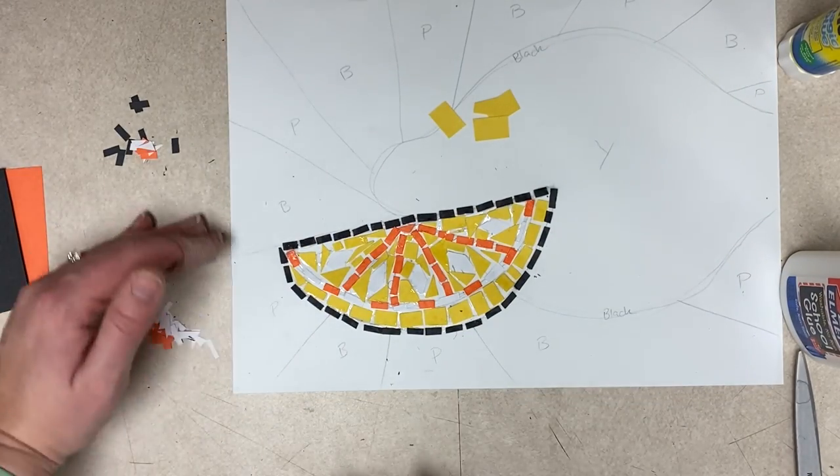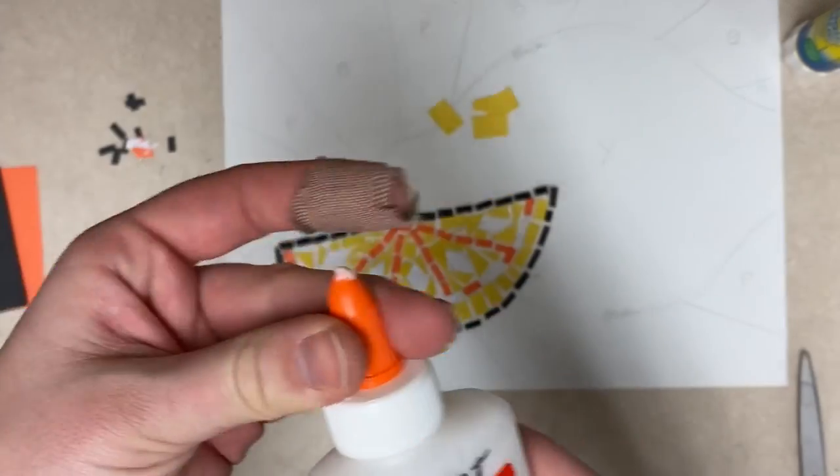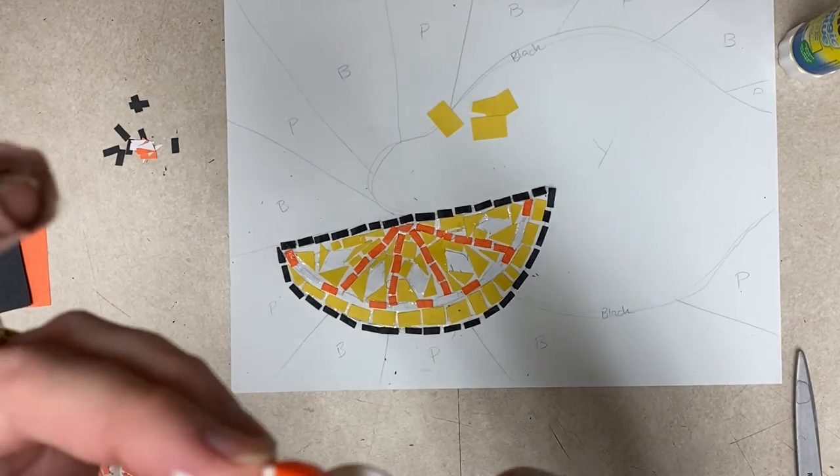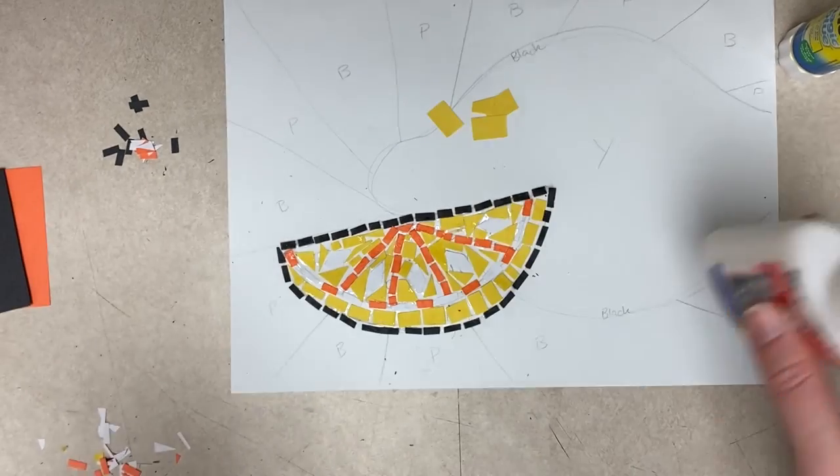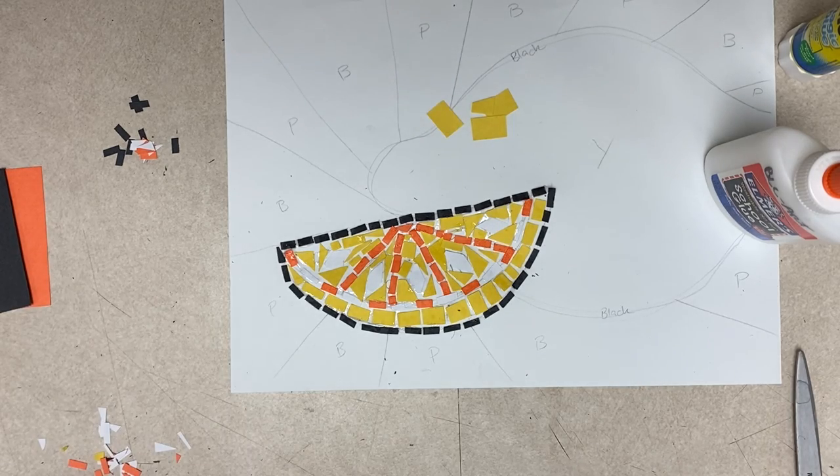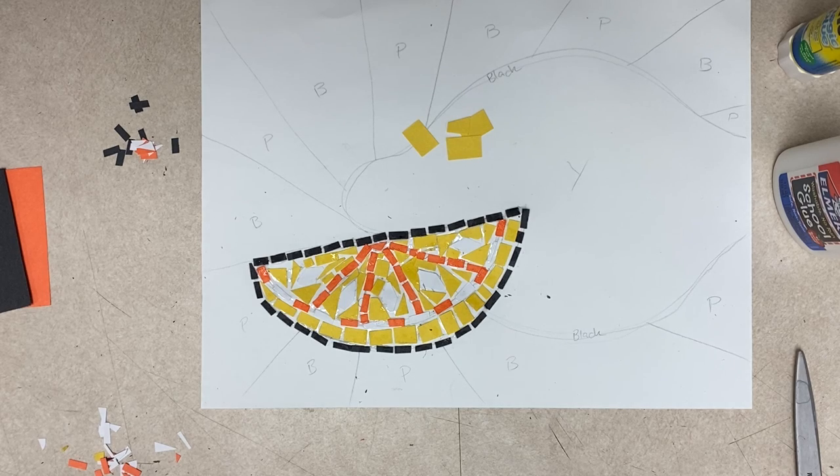If you need like a little ziplock baggie, you can see me and I can see what we can find for you there. But otherwise make sure you close your glue, make sure you clean off the end and store it upright so it stays nice and clean. So best of luck. Here we go, paper mosaics.